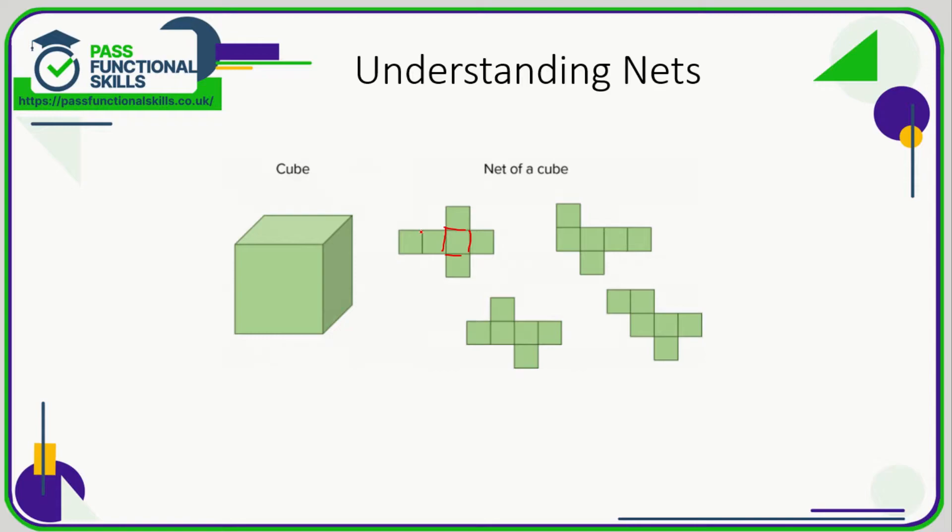Here, here, here, here, and here that would make a cube. Similarly, if we make folds here, here, here, here, and here, it would also make a cube. All of these will make a cube. The key thing is that if you've got this sort of straight line with one on the top, we need one on the bottom as well.